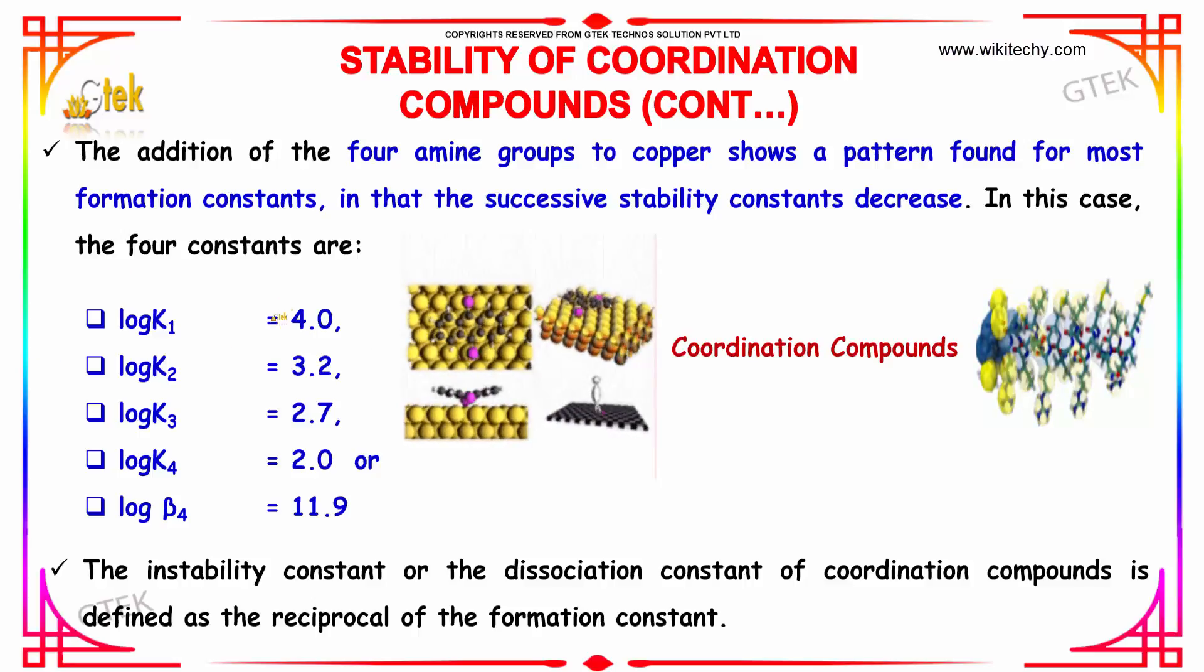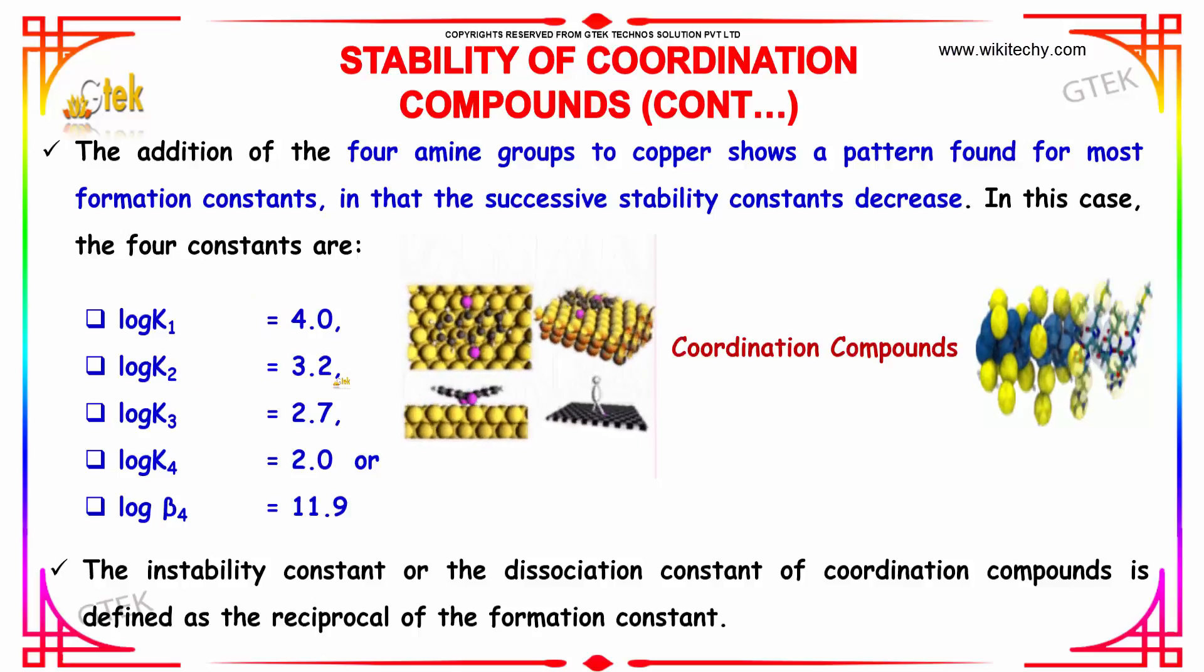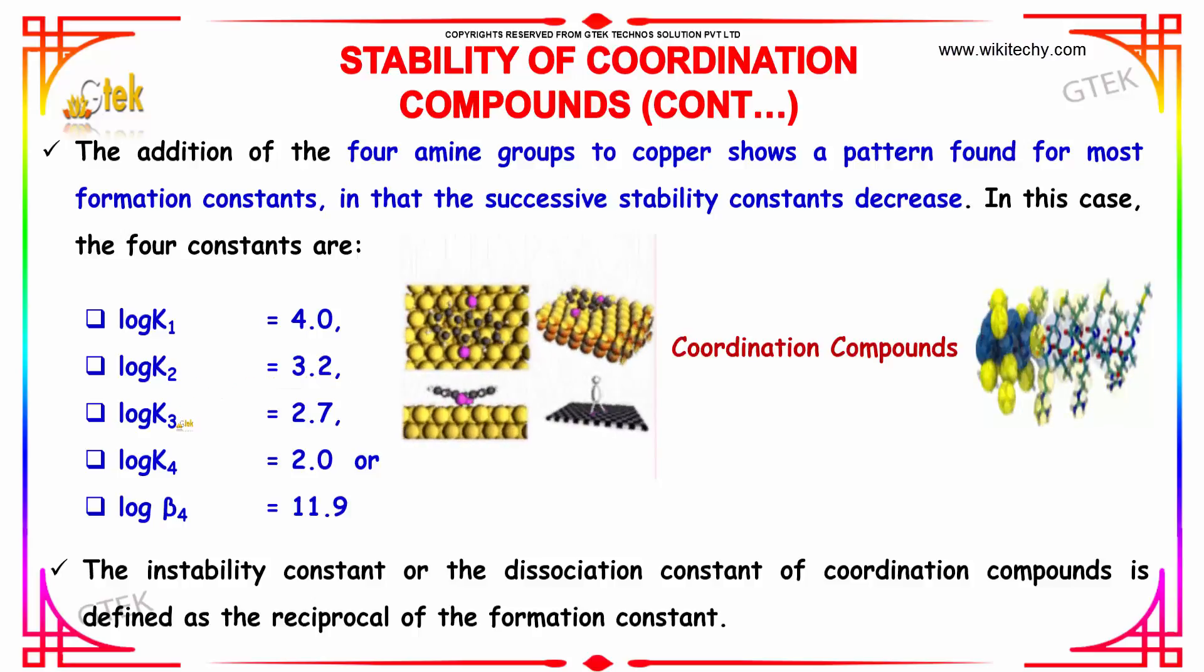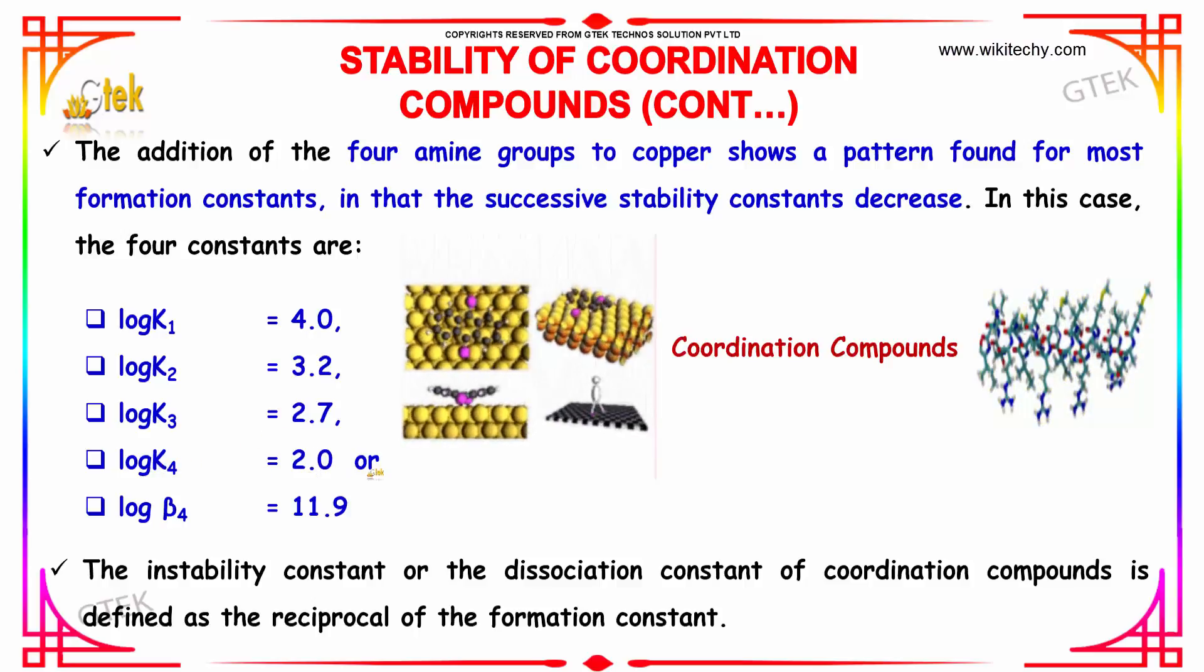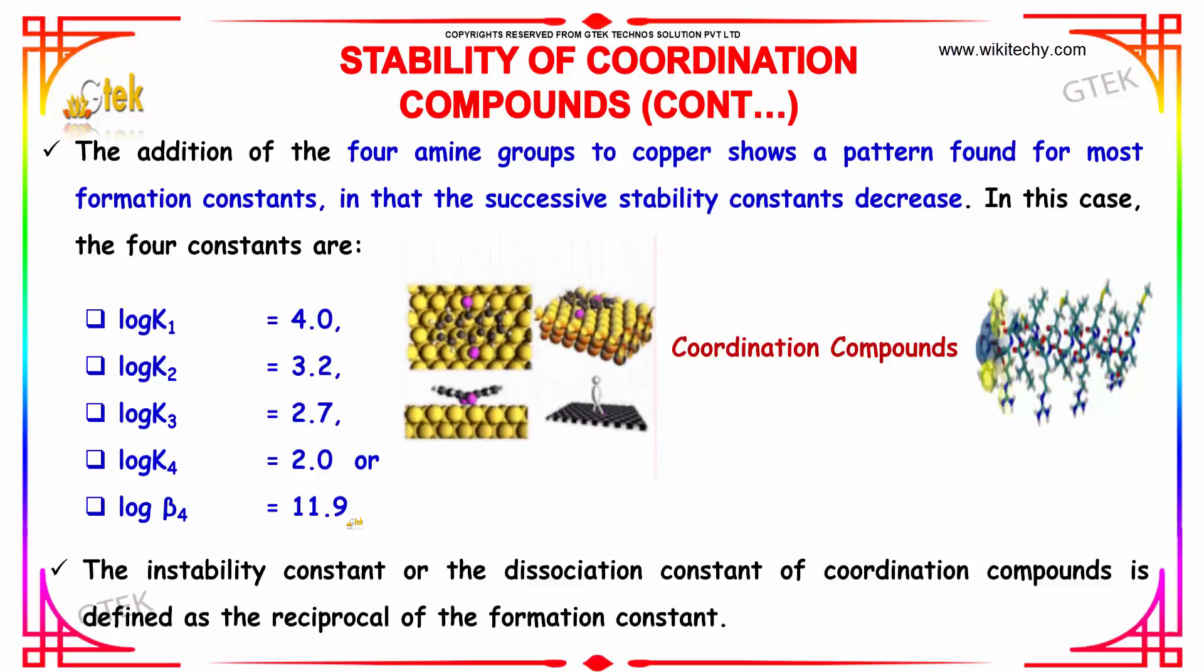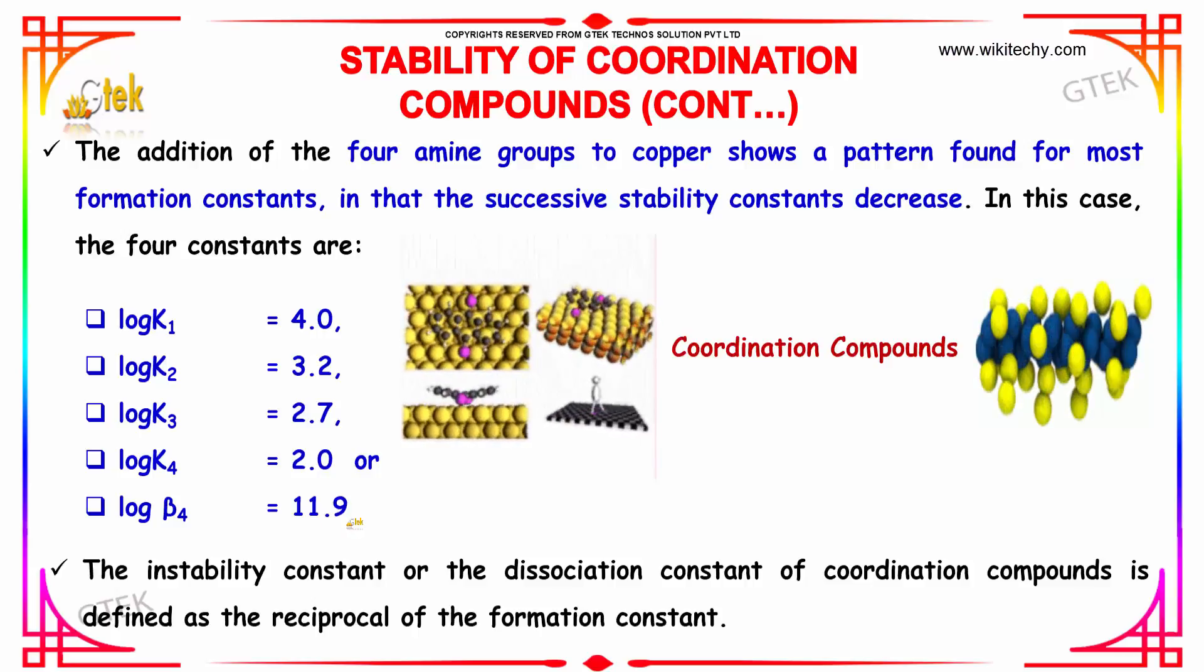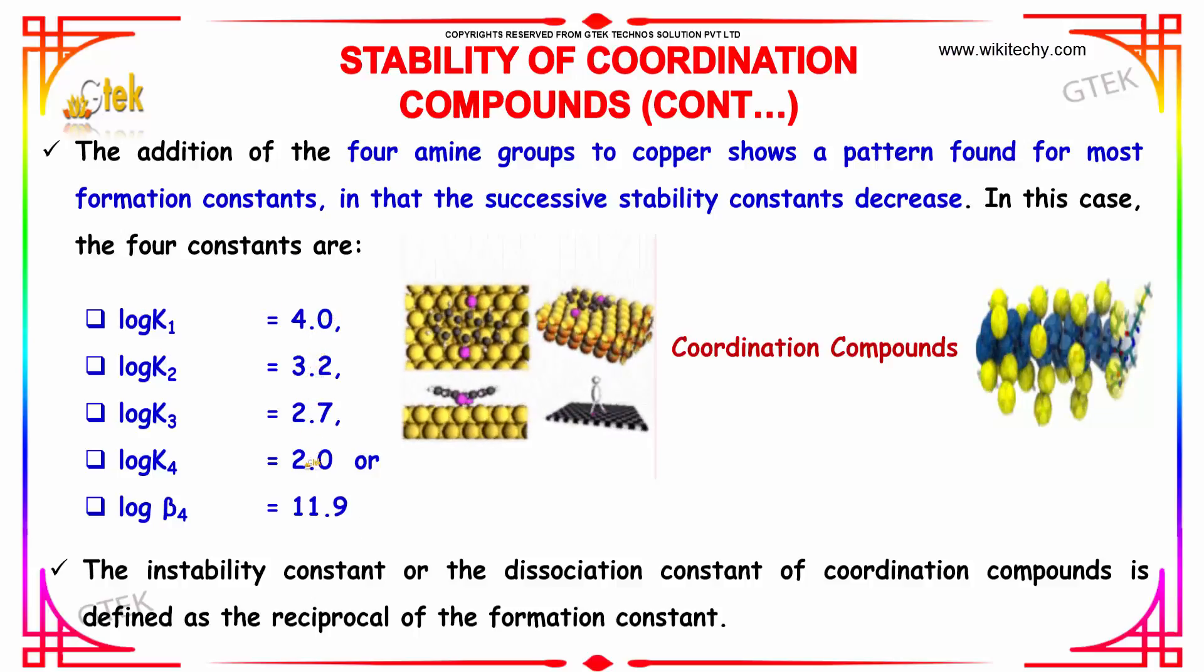Log K1 is equal to 4.0 and log K2 is equal to 3.2. K3 log is 2.7 and K4 log is 2.0 or log beta4 is equal to 11.9. Which is nothing but the summation of all the log K's.